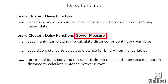For now, I want to talk about the Gower measure. The daisy function uses the Gower measure for calculating the distance between rows that contain mixed data. When you present data to the daisy function, it looks for the data type of each of the columns. If the function finds mixed data, then it automatically selects the Gower measure for finding distance between rows. After this, the Gower measure applies a suitable distance measuring technique that corresponds with the data type of each column.